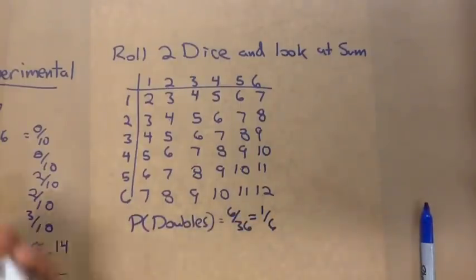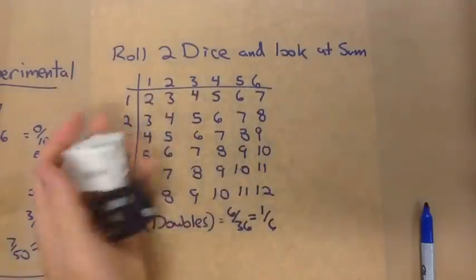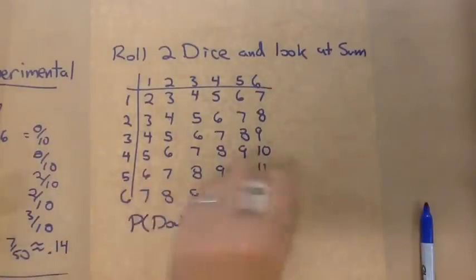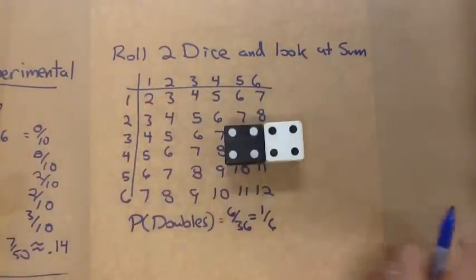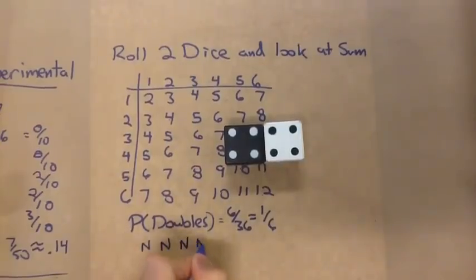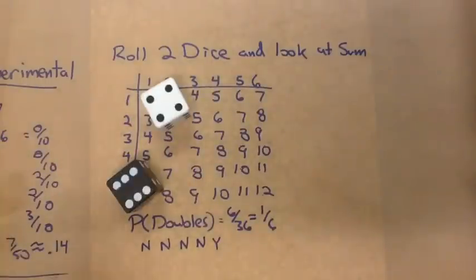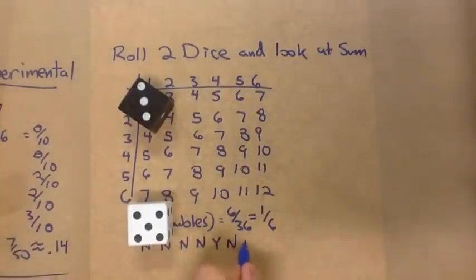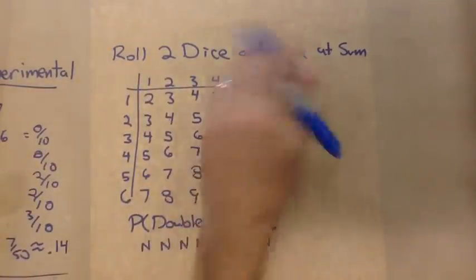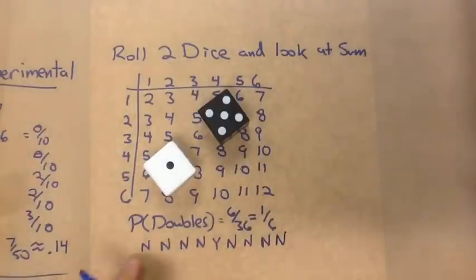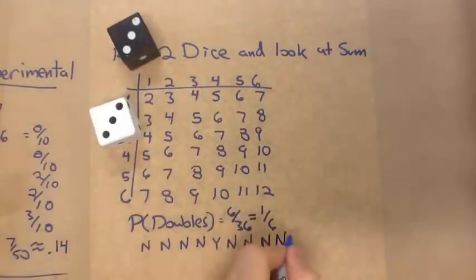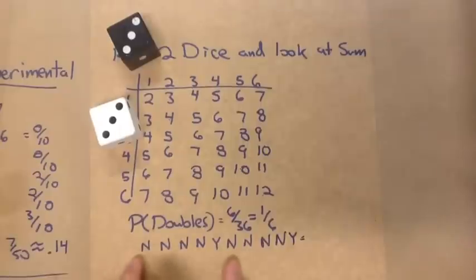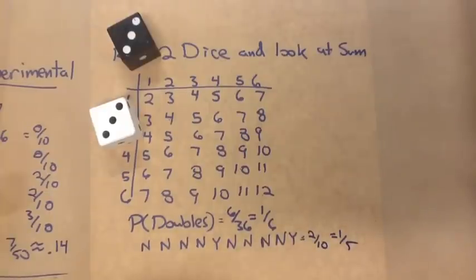I'm not going to roll too many, but we can start to see the experiment. I rolled: one, two, three, four — on the fifth one I got no, no, no, no, yes — a double! We'll do one more: another no. So on those six, I got one out of six for doubles. Then another no, no, and a yes on roll ten. So we had two out of ten as our experimental probability, which came up a little more than the theoretical one-sixth.